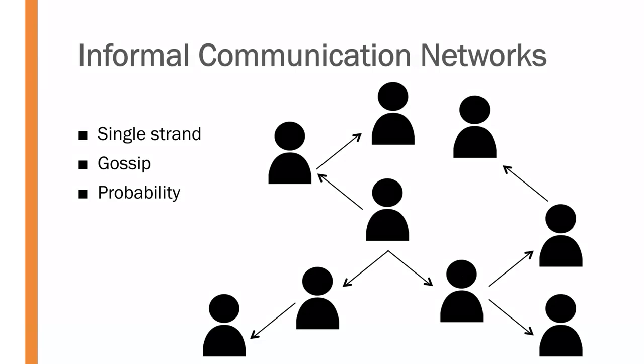Another type of informal communication network is what we call probability. In probability, one person sends a message to a random selection of others who then themselves transmit it to a random group of others, and it proceeds like that throughout the organization. Think of it like chain mail or a spam email — it starts with one person, gets shared to a couple of others, those people share it with others, and it grows exponentially. There's not a structured way that the information is transmitted throughout the group.